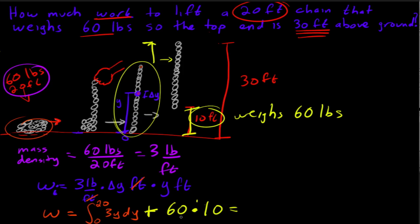And this is a constant. And so then when you do this guy, we're going to get three y squared over two, from zero to 20, plus 600. And so the total is 1,200 foot pounds.